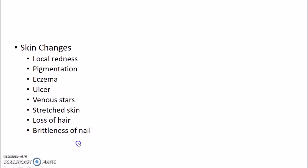You need to inspect for skin changes: local redness, which is present in superficial thrombophlebitis; pigmentation — look for dark red or black spots; eczema or dermatitis; and ulcer — inspect the site, shape, size, edge, floor, discharge, and surrounding area of the ulcer. You need to inspect for venous stars, which are a number of minute veins radiating from a single feeding vein. Other inspection findings include stretched skin, loss of hair, and brittleness of nails, which indicate impending gangrene.